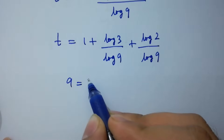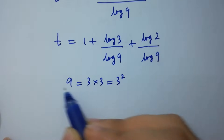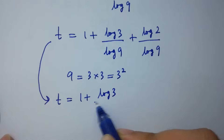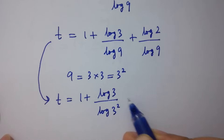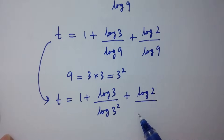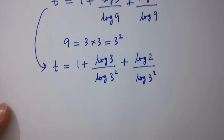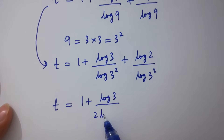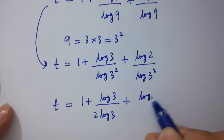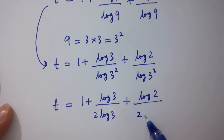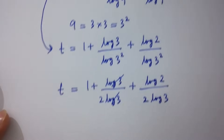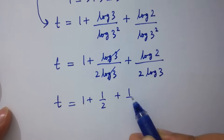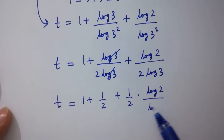Since 9 equals 3 times 3 which equals 3 squared, t equals 1 plus log 3 over log 3 squared plus log 2 over log 3 squared. This gives t equals 1 plus log 3 over 2 log 3 plus log 2 over 2 log 3 — and log 3 and log 3 cancel, giving t equals 1 plus half plus half times log 2 over log 3.